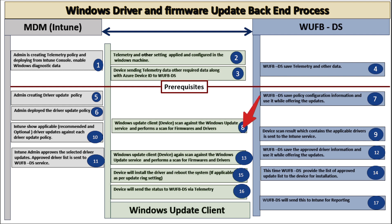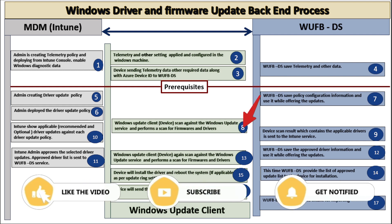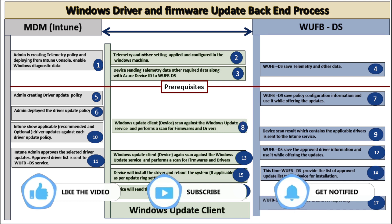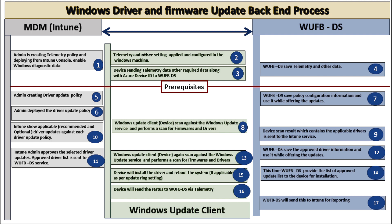After this, the Windows Update client or device scans against the Windows Update service and performs a scan for firmware or driver updates. The device scan result contains the applicable drivers — both recommended and optional — against each driver update policy. The Intune admin then approves the selected driver updates, and the approved driver list is sent to the Windows Update Deployment Service.